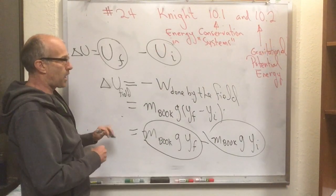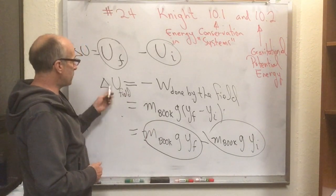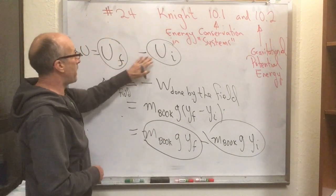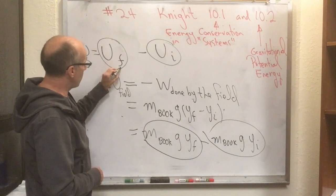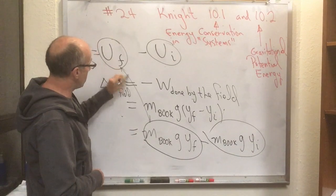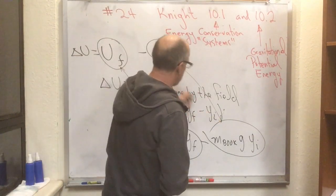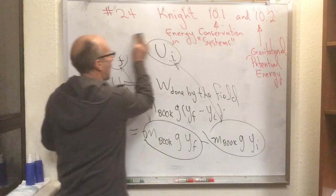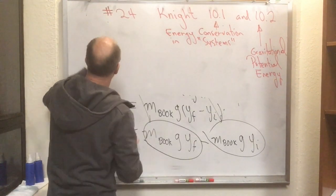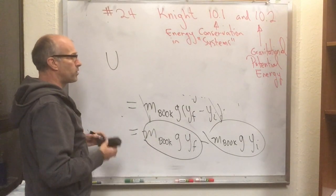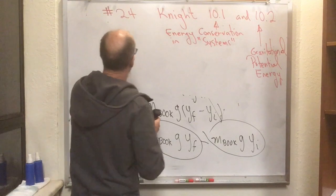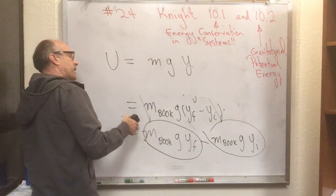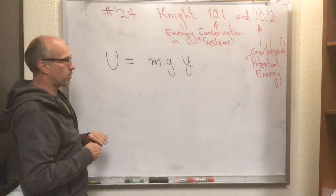Now you can see a sort of rather obvious identification to make, that if this was the change in the energy in the field, and we just calculated it, and the change in the energy in the field is U final minus U initial, well, now we have a fairly obvious identification that U final is M book G Y final, and U initial is M book G Y initial, and this is the origin of a formula that you'll see a lot, which is the gravitational potential energy of having a book at a certain height is M G Y, where Y is that height, G is the 9.8 meters per second squared, and M is the mass of the book or anything else that you're considering.